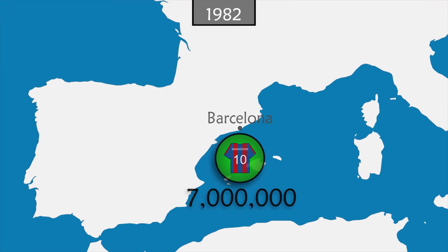In 1998, France organizes the first World Cup played with 32 teams. In the final, France wins against Brazil 3–0, with two goals from Zinedine Zidane. In 2001, Zidane is bought by Real Madrid for the record sum of 75 million euros. The following year in 2002, Japan and South Korea co-host the World Cup.